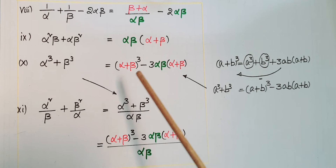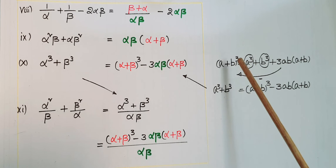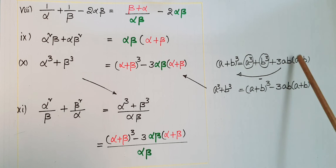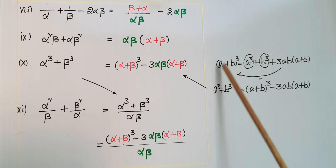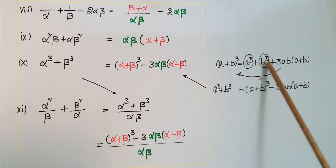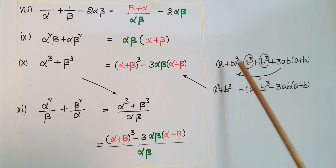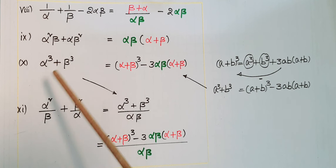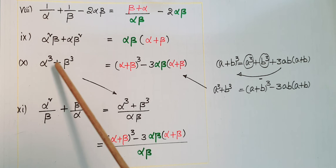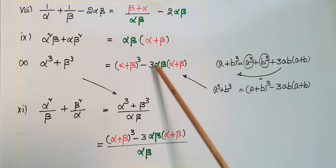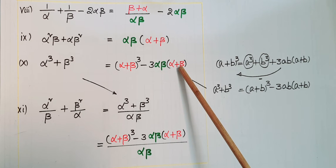Next, alpha³ plus beta³: using the identity (a+b)³ equals a³ plus b³ plus 3ab(a+b), rearranging gives a³ plus b³ equals (a+b)³ minus 3ab(a+b). Therefore, alpha³ plus beta³ equals (alpha+beta)³ minus 3·alpha·beta·(alpha+beta).